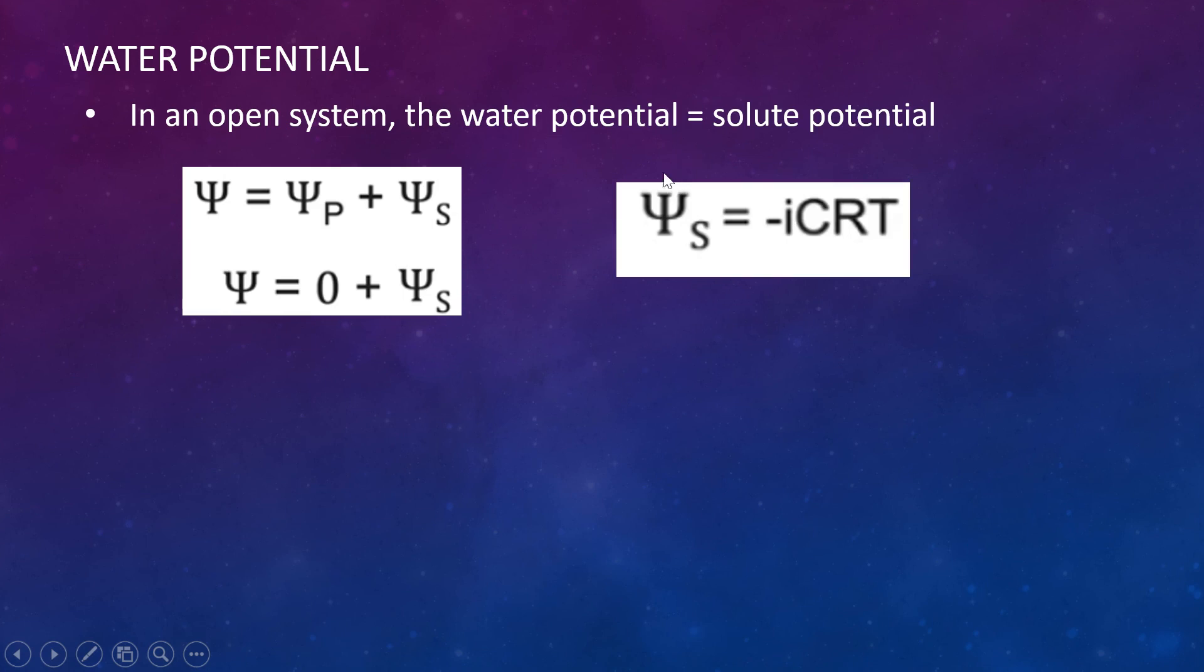We have another equation and that is water potential of our solute is equal to negative iCRT. And i is equal to the ionization constant. It's how many ions. And the big thing for this is when something is dissolved in a solution, how many ions does it make? So sucrose, sugar, when it dissolves, it just stays sucrose and just breaks apart. So it's got one ion per every sucrose molecule. So sodium chloride, on the other hand, is an ionic compound. It breaks apart into sodium ions and chlorine ions. So it breaks apart into two ions. So its ionization constant is two because it makes two ions per every sodium chloride molecule.